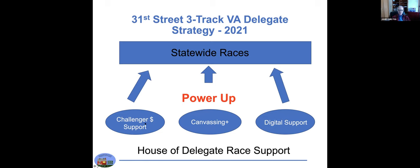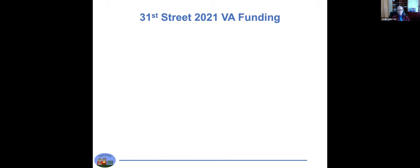Turning to Virginia, just to recall this was our strategy: supporting three aspects of the House of Delegates—initial early challenger support, canvassing, and digital support. The idea was that it was going to power up the statewide races, which of course we lost.